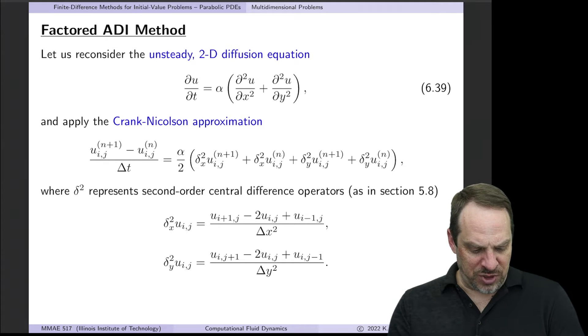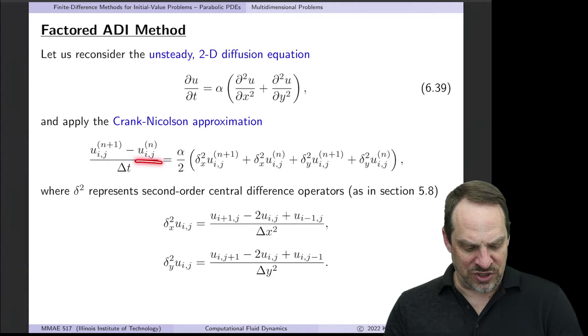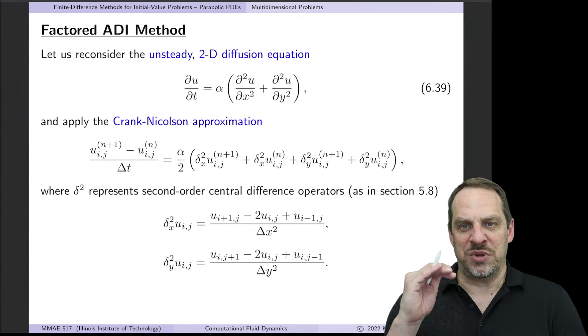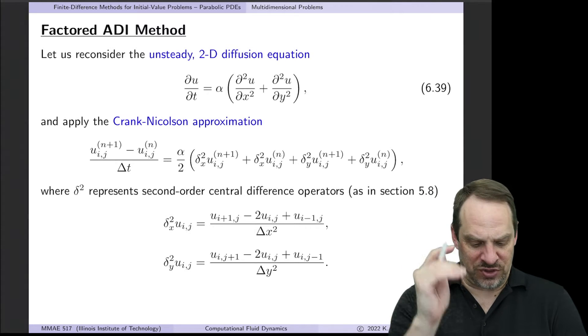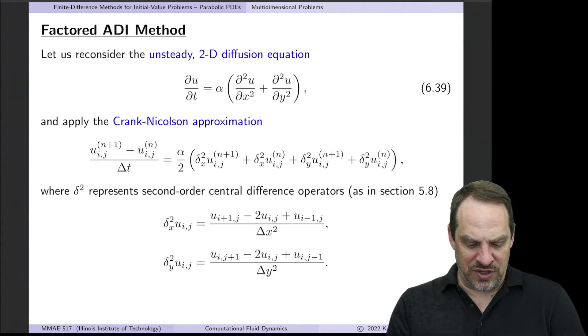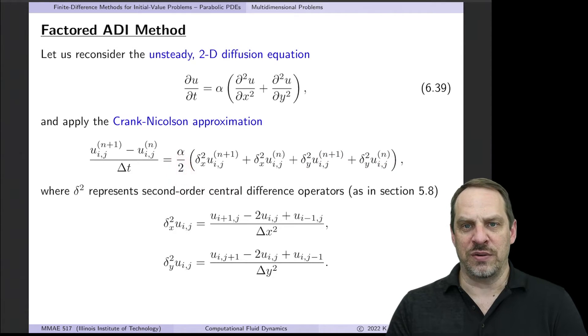Let's start by applying the Crank-Nicholson approximation. So we have a second-order accurate central difference in time, u_ij^(n+1) minus u_ij^n over delta t. And then in Crank-Nicholson, remember that we average the spatial derivatives at the nth and the n plus first time level. So we have the x derivative at n, x derivative at n plus 1, y derivative at n plus 1, y derivative at n, and then we average those together.